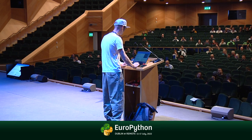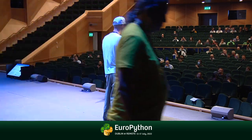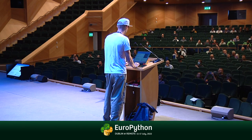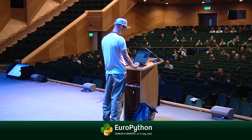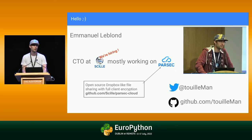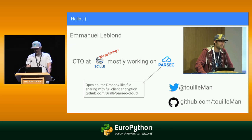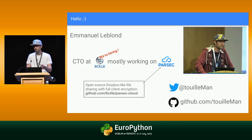Hello everyone. I don't have much time because I have a really big number of slides, so I will go really fast. I'm Emmanuel. I'm in a company writing a software called Parsec, which has absolutely nothing to do with the gaming company. We chose the name at the same time — that kind of thing happens. If you're interested in really secure open-source software with end-to-end encryption, you should check it out. It's in Python and all the source code is there.